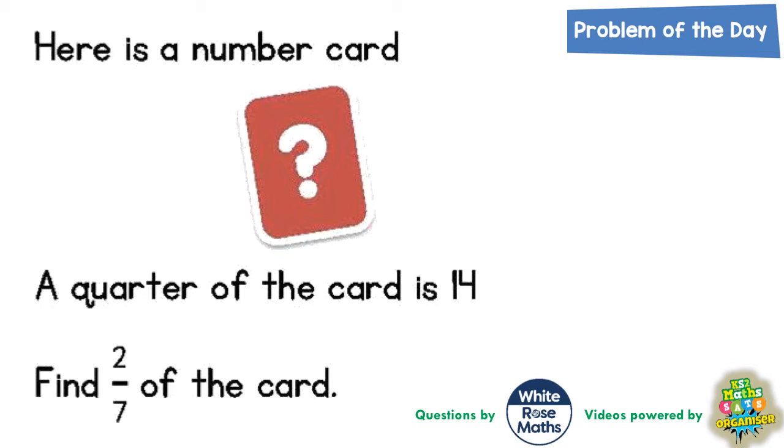Well the easiest way to tackle this problem is with a bar model and see where that leads us. Now we're told first of all that a quarter of the card is 14. So let's split the bar into quarters. And one quarter, so a quarter means one quarter.